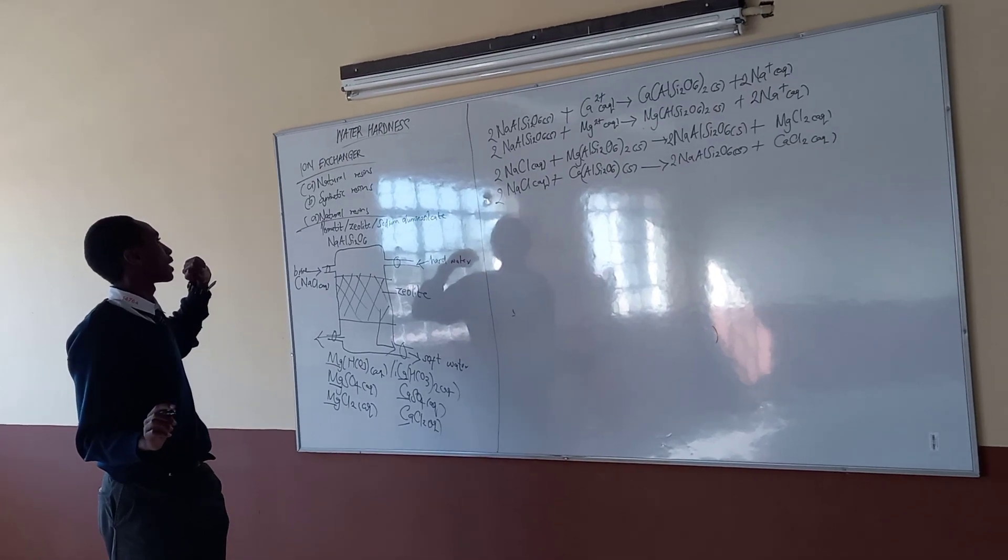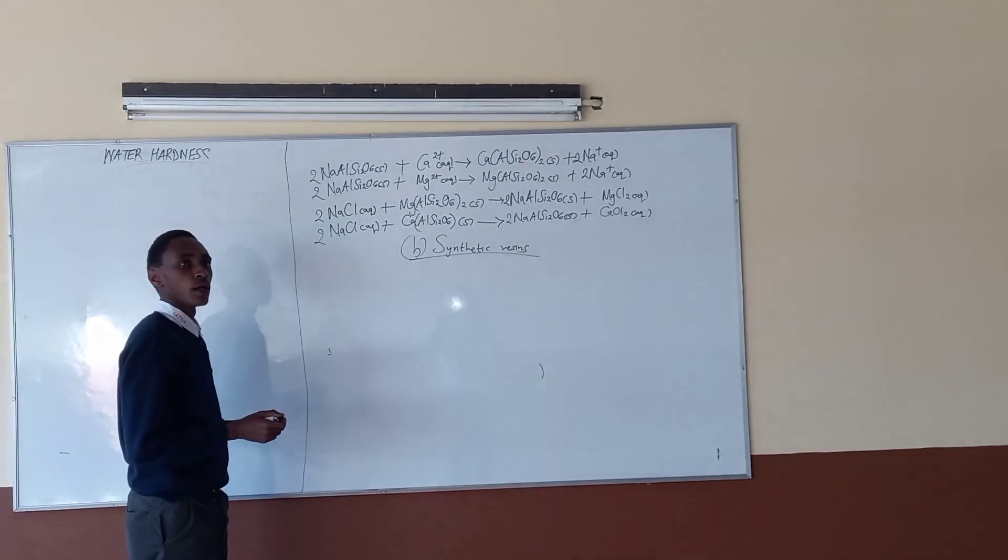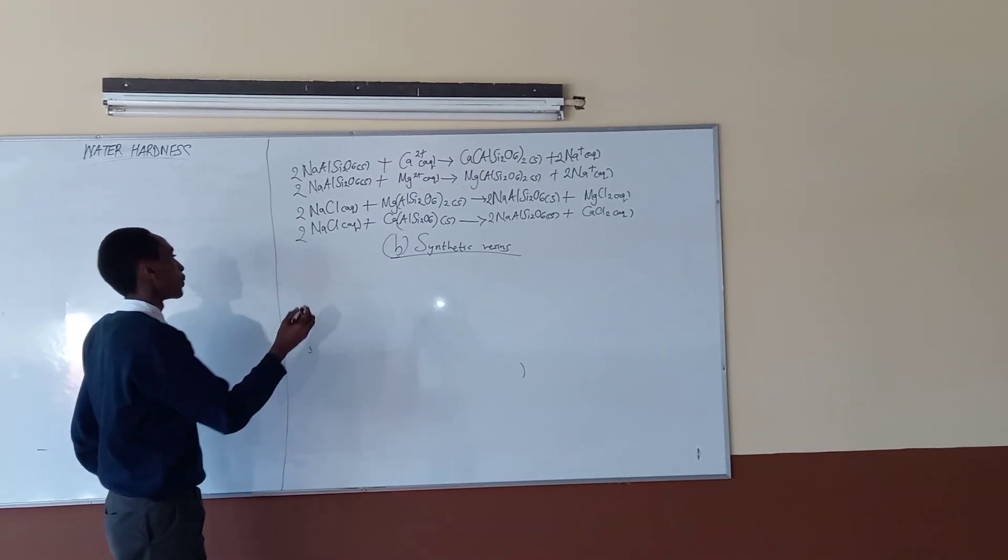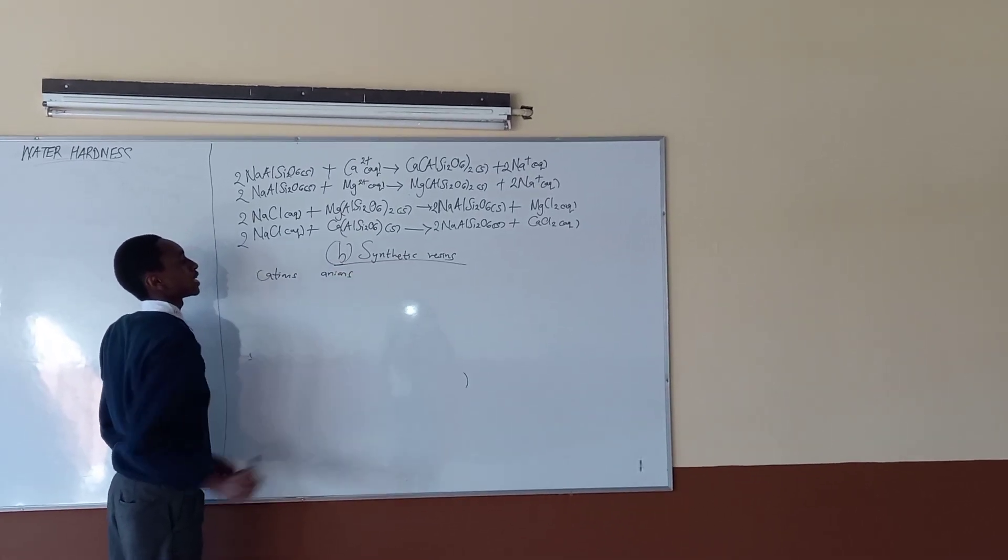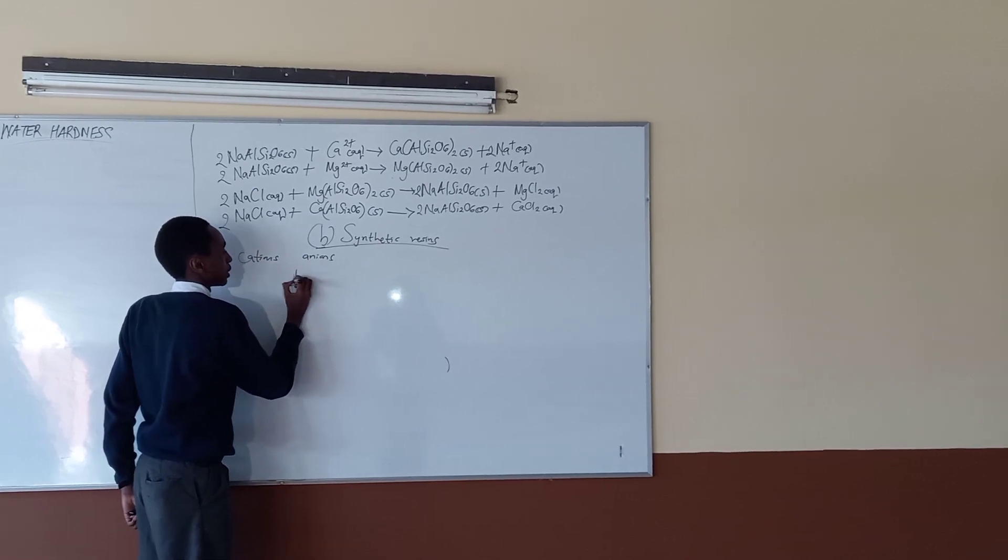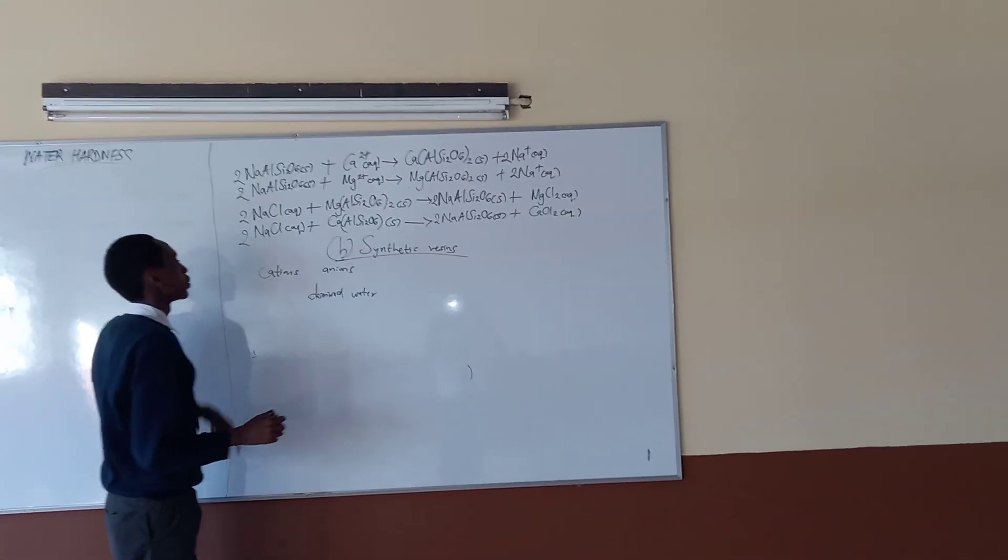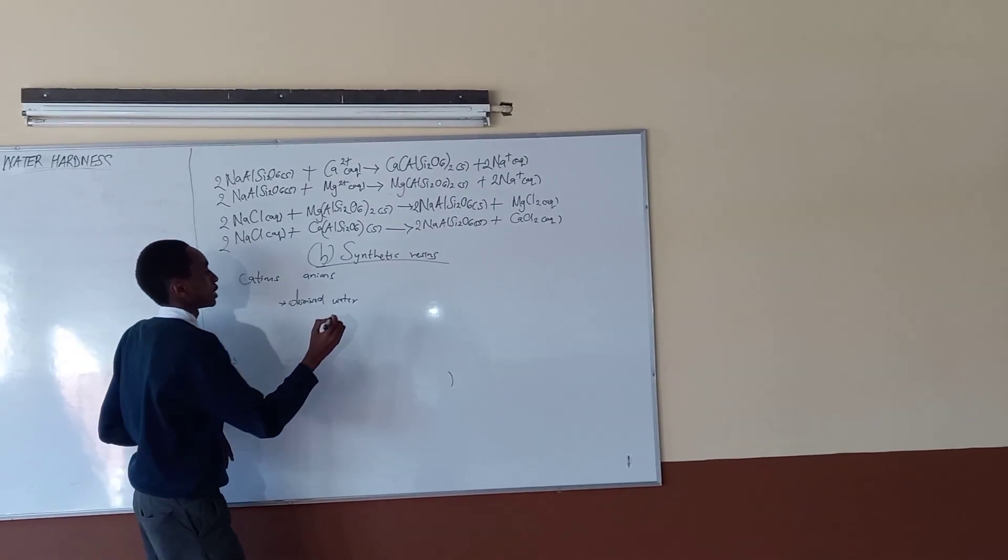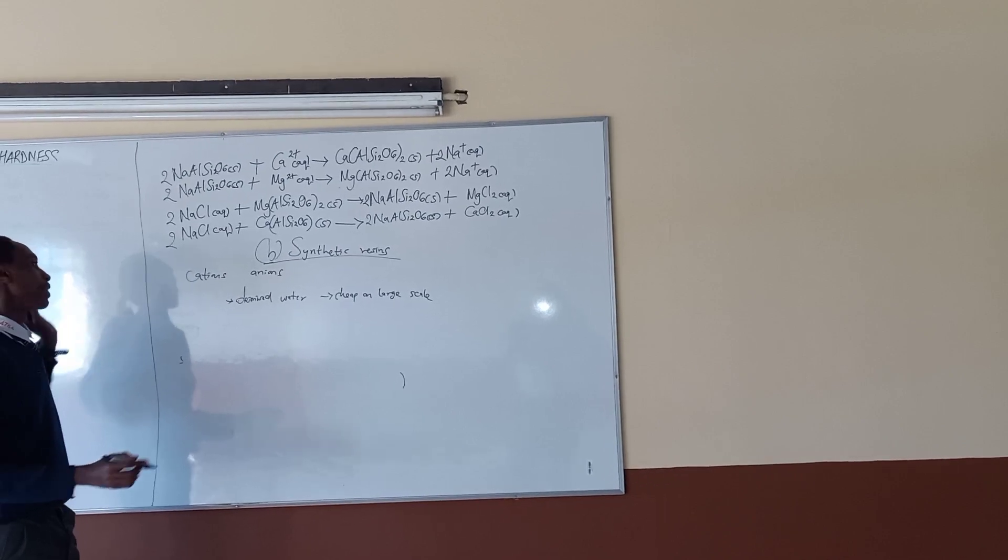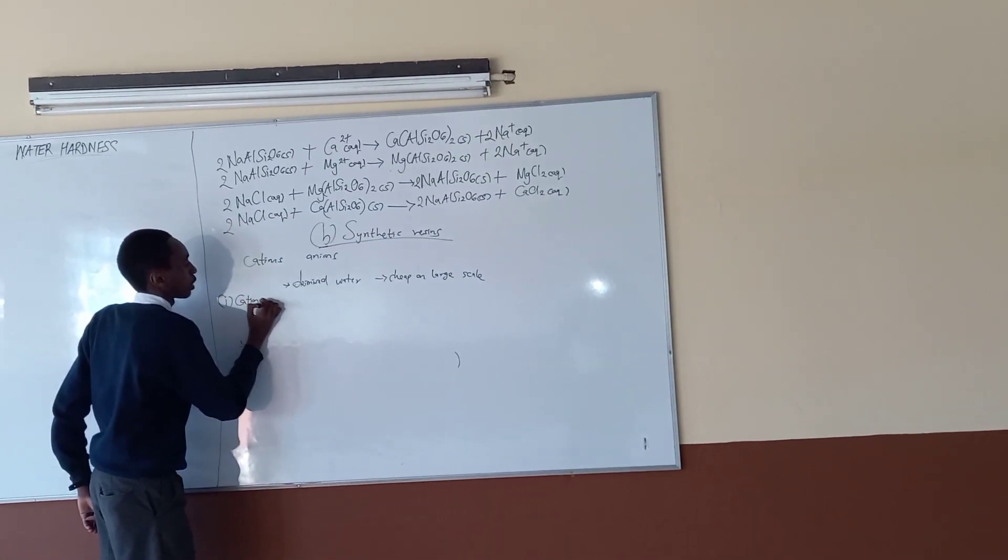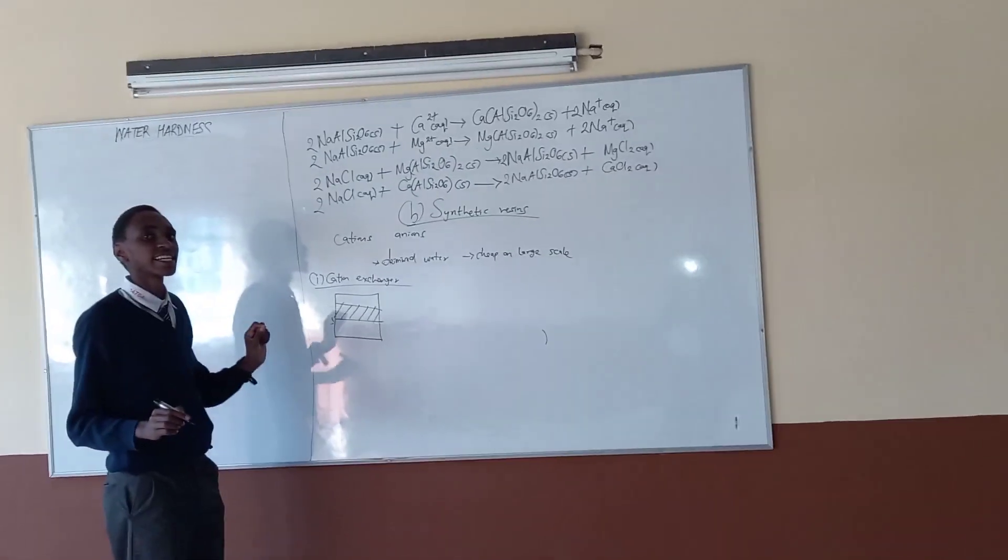So we proceed to the next step which is synthetic resins. Part F of our topic. When we use the synthetic resins, we get to remove the cations and anions. So what you get as soft water will be called deionized water. It won't have either the cations or anions. So this is an advantage. Another advantage is it's cheap and it's long-lasting. So let's break this down. The synthetic resins, there is part one, cation exchanger. This is like a tank.